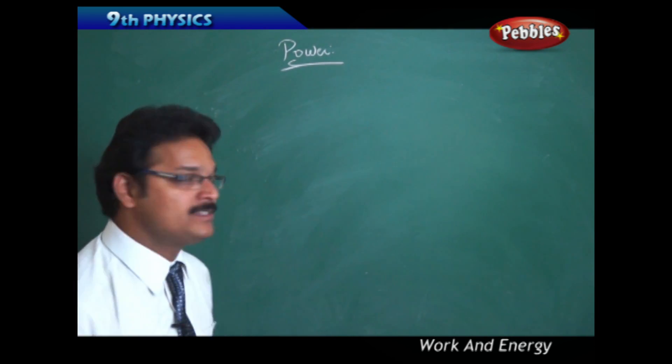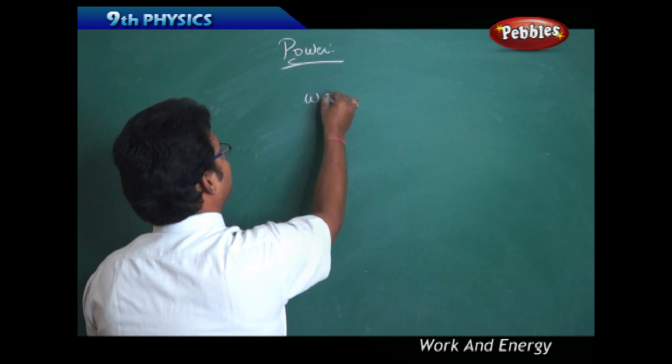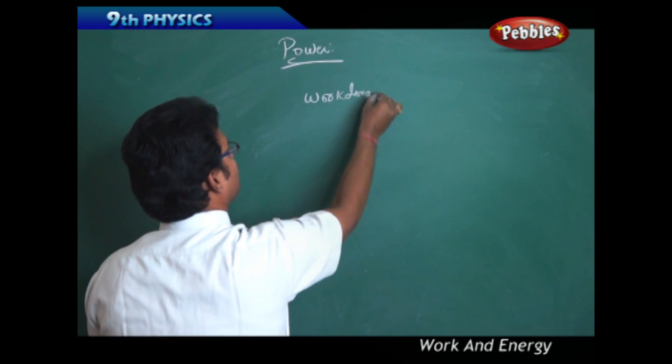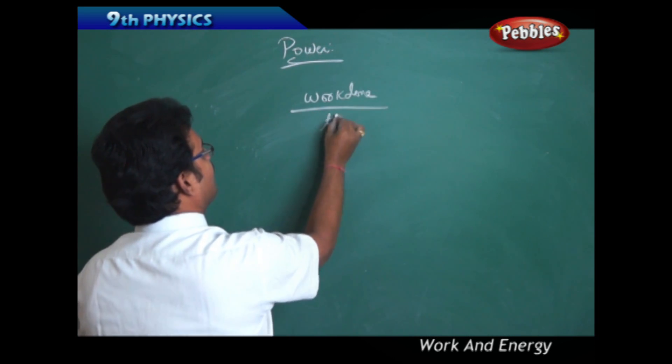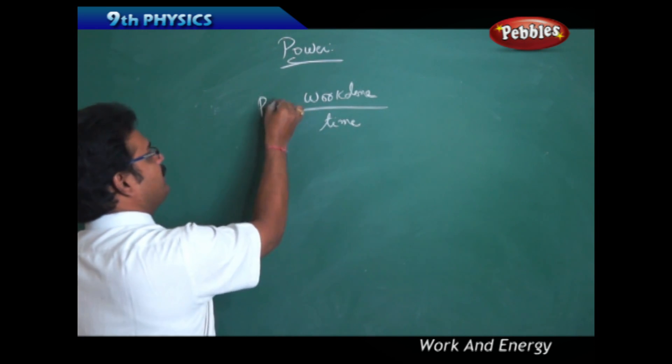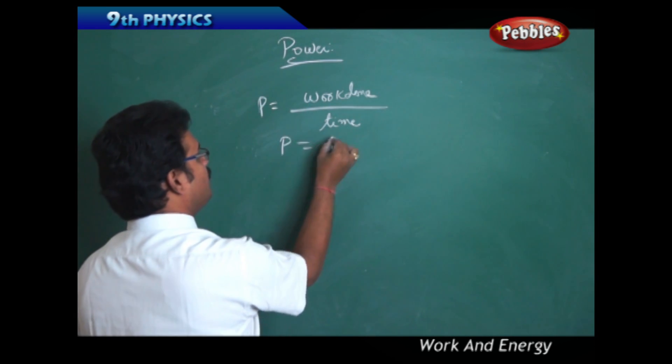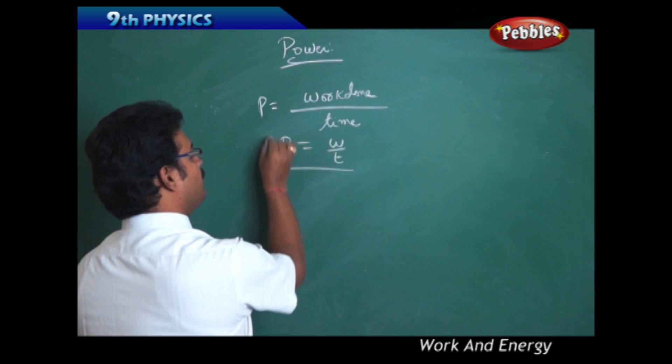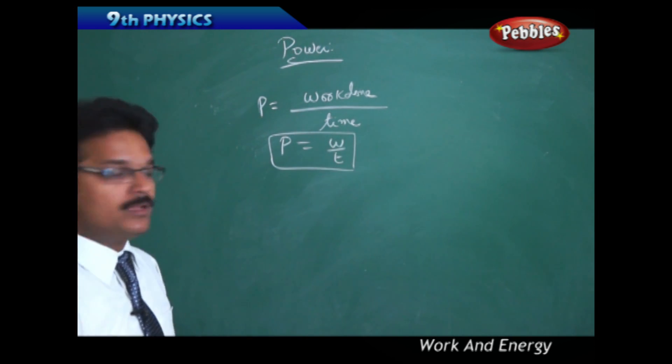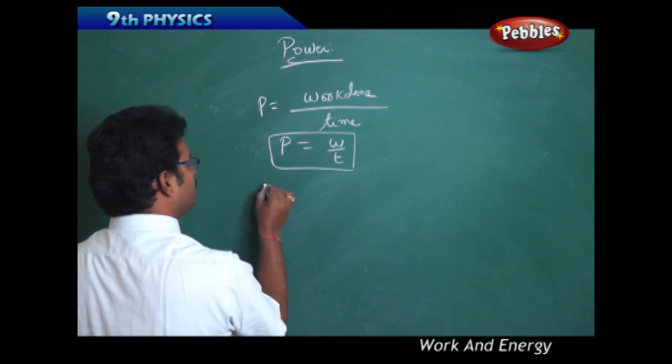Power is defined as the amount of work done per unit time. Power P equals work by time, or P = W/T.